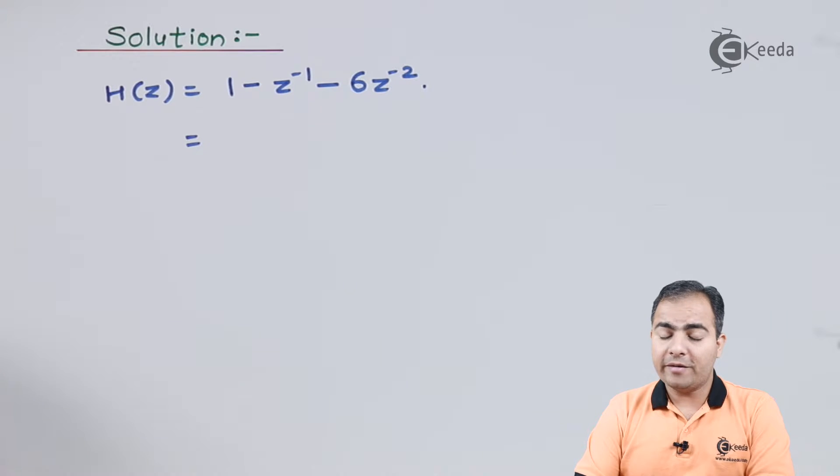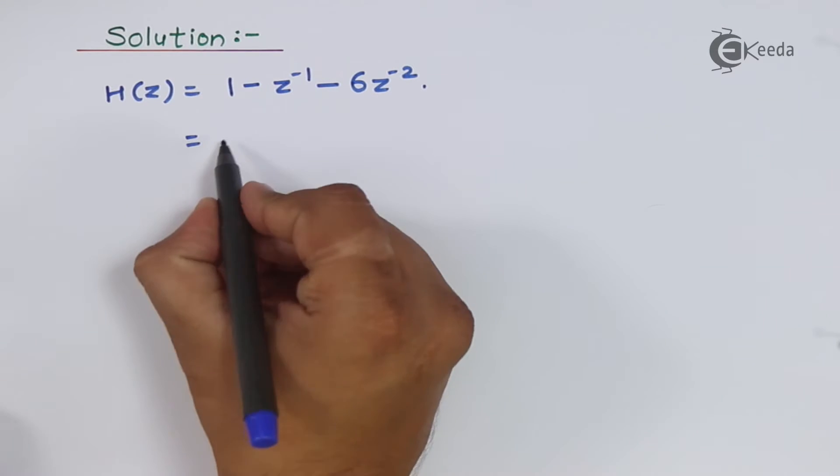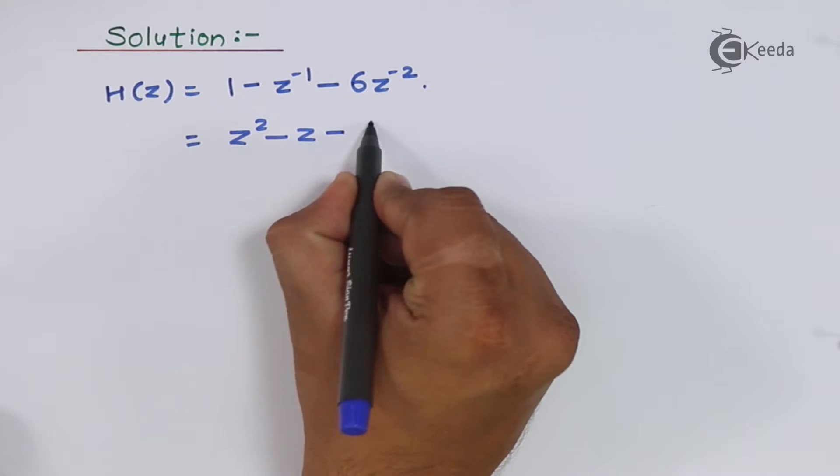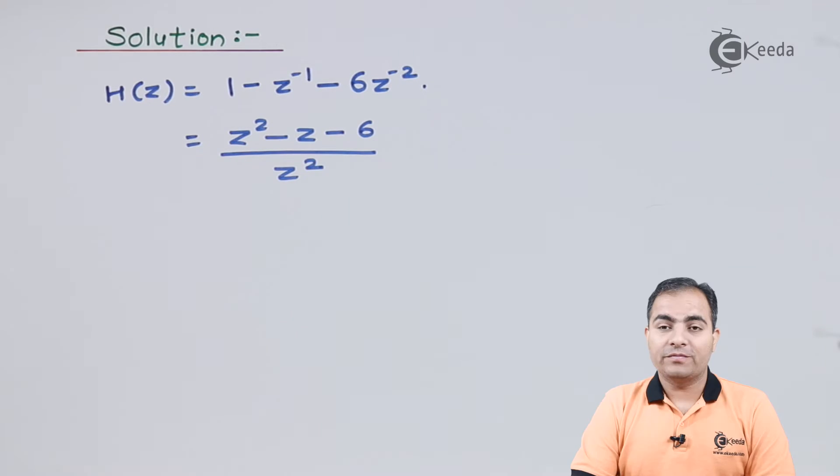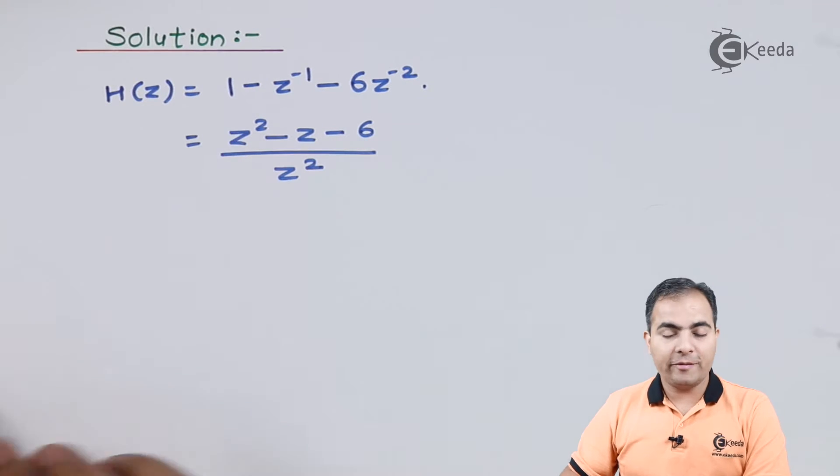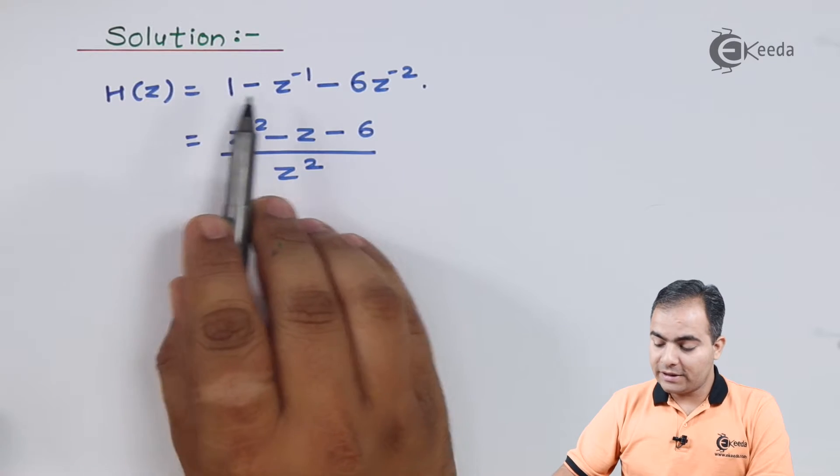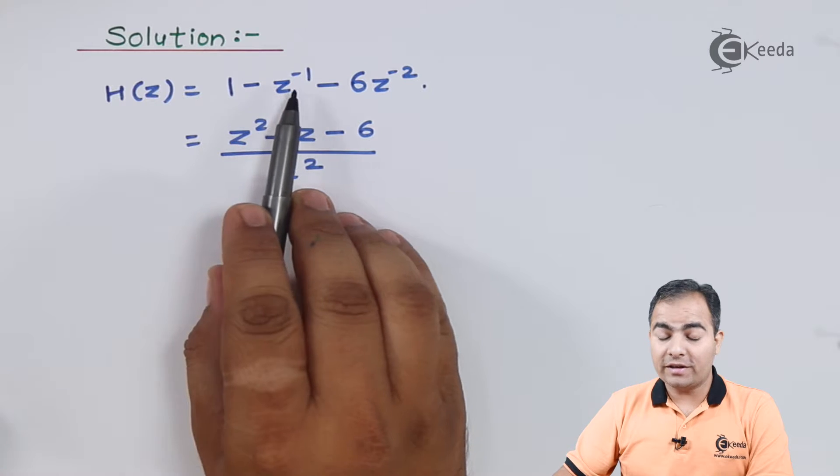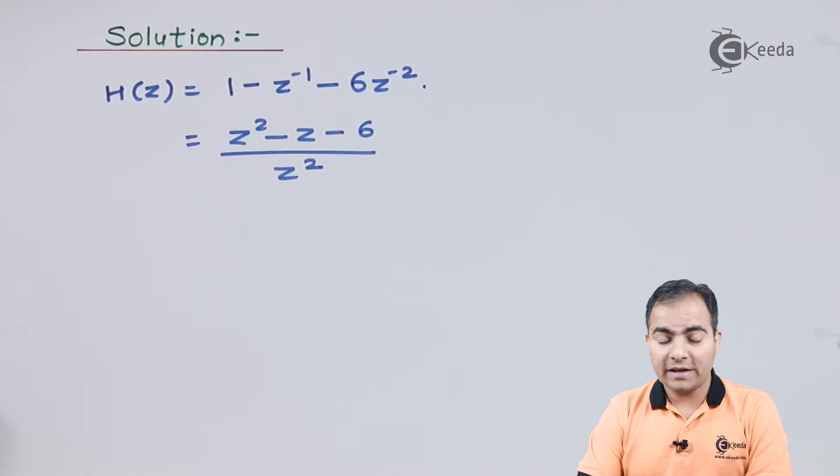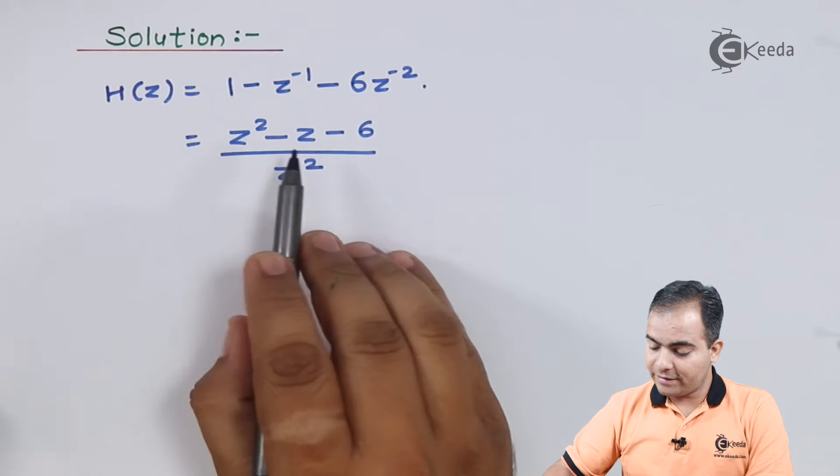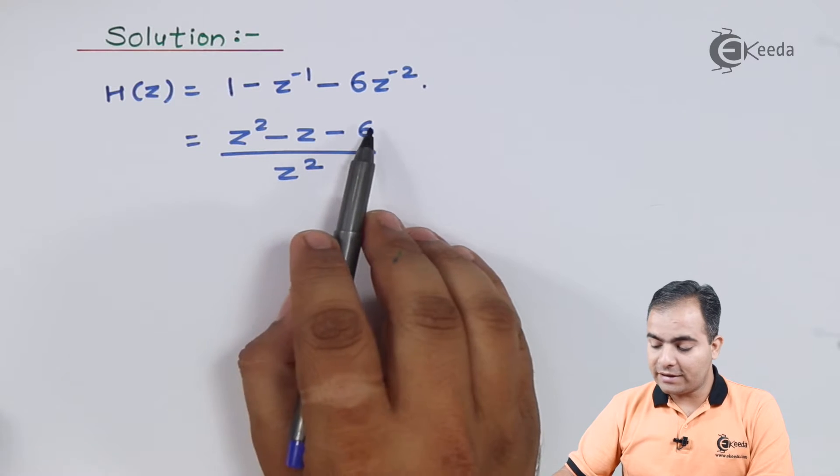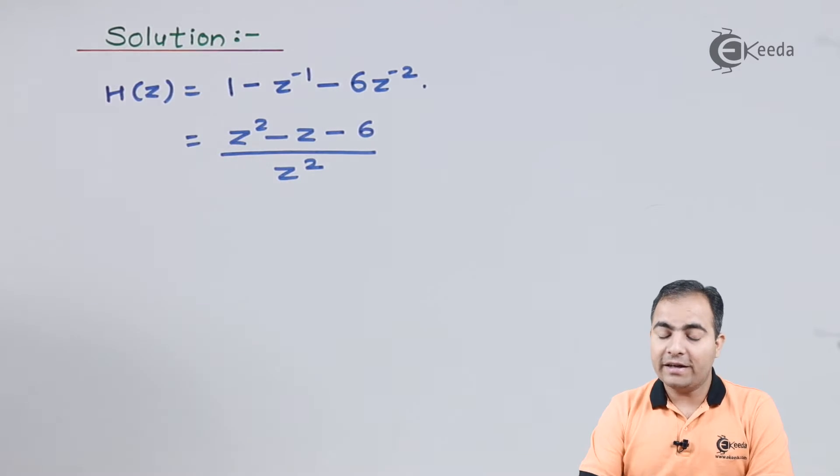I'll multiply numerator and denominator by z square. We have multiplied by z square, so I get z square in denominator. Z square times 1 is z square, z square times z to the minus 1 gives z, and z square times z to the minus 2 gives 1. If bases are same, powers get added. So 2 minus 1 is 1, and 2 minus 2 is 0, giving us z square minus z minus 6 over z square.